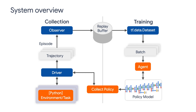We then feed the trajectories to our agent to train it so that it becomes better at receiving rewards from the environment. We keep doing this until the agent has a good policy to extract the most rewards from the environment.